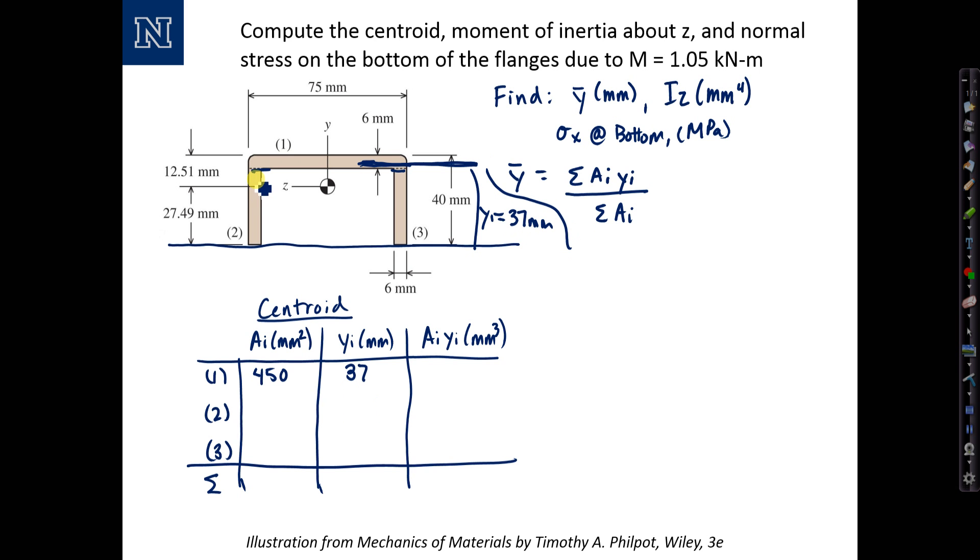Now let's move on to sections two, which are the flanges, and section three over here, which, as we said, are identical. Their area, they're both six millimeters wide times a height of 40 minus six or 34. So the area is 34 times six or 204 millimeters squared for each of them.